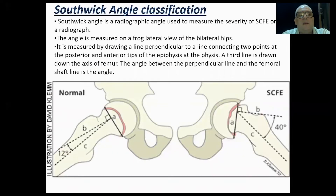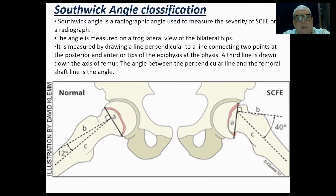The Southwick angle classification: looking at the figure, you draw a line joining both ends of the physis and drop a perpendicular to it. Another line is co-linear with the shaft in the middle. These two lines meet and subtend an angle of normally 12 degrees. On the slip side, the subtended angle may be 40 degrees. You subtract 40 from 12 to get 28 degrees of slip.